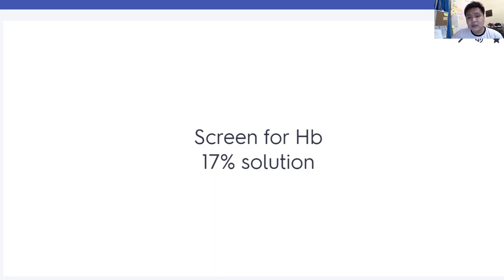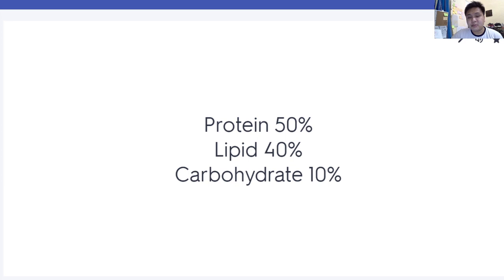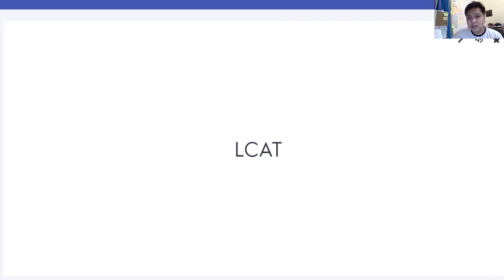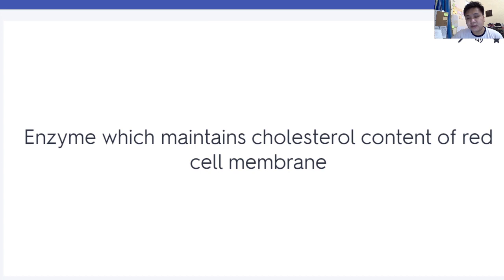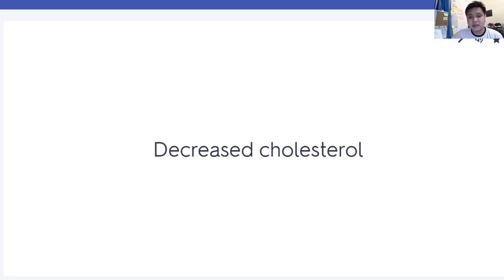RBC membrane components: protein 50%, lipid 40%, carbohydrate 10%. LCAT or lecithin cholesterol acyltransferase is the enzyme which maintains the cholesterol content of your RBC membrane. Codocyte — increased cholesterol. Ovalocyte — decreased cholesterol.